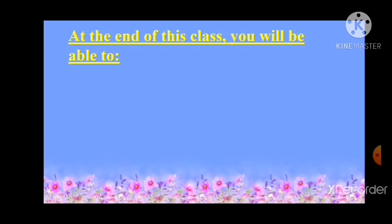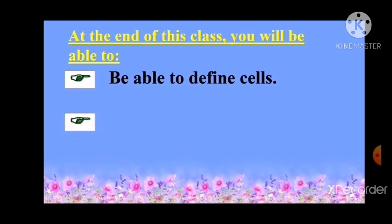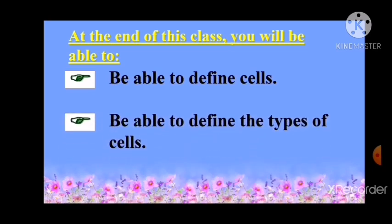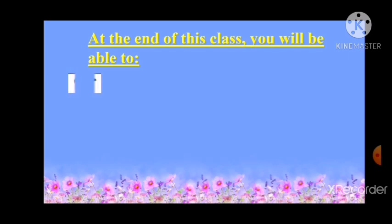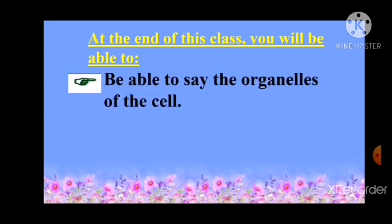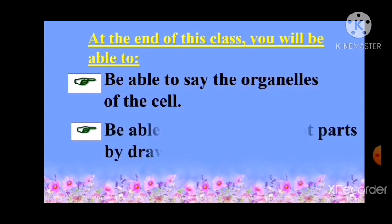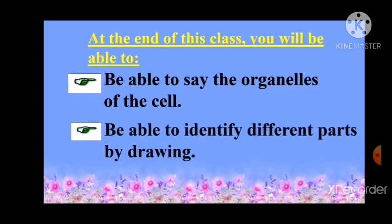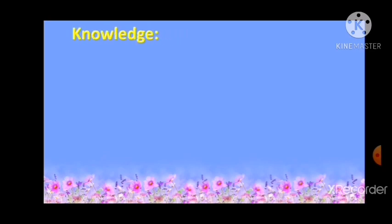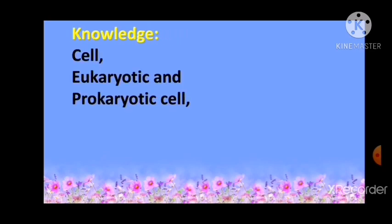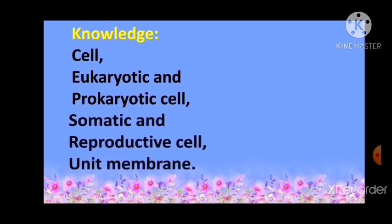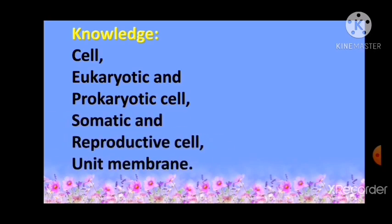At the end of this class, you will be able to define cells, define the types of cells, list the organelles of the cell, and identify different parts by drawing. Knowledge-based questions include: cell, eukaryotic and prokaryotic cell, somatic cell and reproductive cell, and unit membrane. You have to learn these knowledge-based questions.